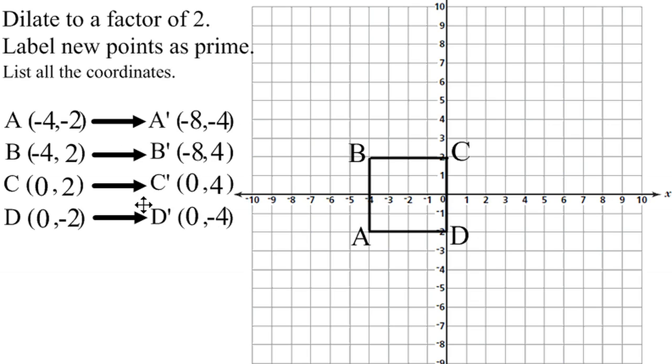Now we have our new prime coordinates, and we are going to place points on each one. A prime is negative 8, negative 4. So we go to the left 8 and down 4, and put the point right there.